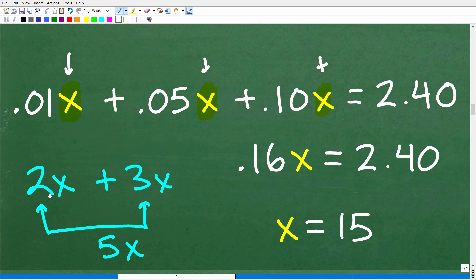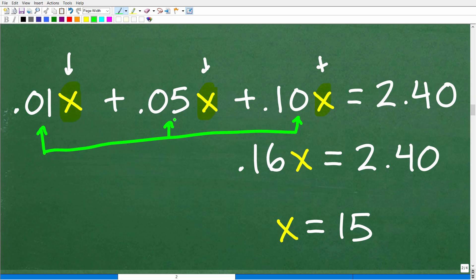Don't let these decimals bother you. The main idea is to recognize that we are dealing with like terms, so I can add up these coefficients. Get your calculator out if you're not comfortable with decimals. We got 0.01 plus 0.05 plus 0.10. When we add up all those decimals, we get 0.16x. So 0.16x equals 2.40. To solve for x, divide both sides by 0.16. So 2.40 divided by 0.16 is 15. x equals 15.